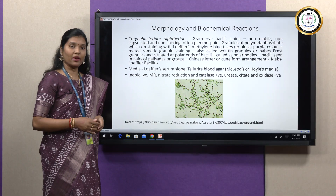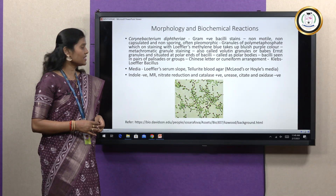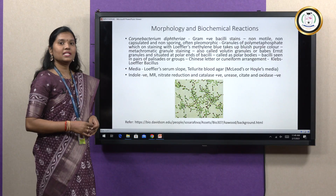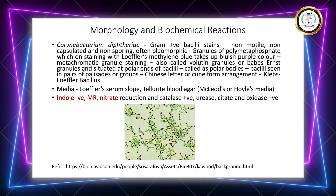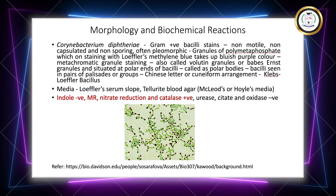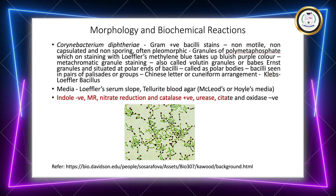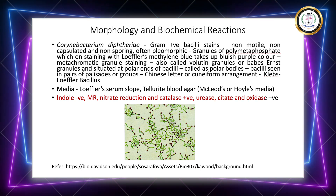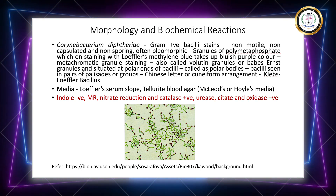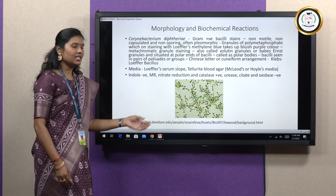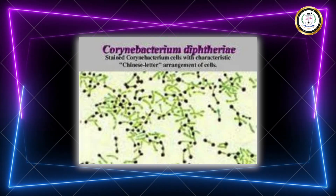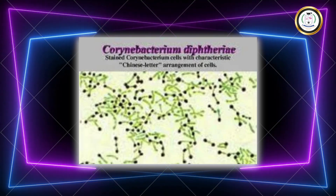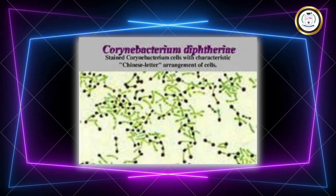Coming to the biochemical reactions, Corynebacterium diphtheriae is indole negative, MR, nitrate reduction, and catalase positive, while urease, citrate, and oxidase are negative. You can see an image of Corynebacterium diphtheriae showing the Chinese letter arrangement.